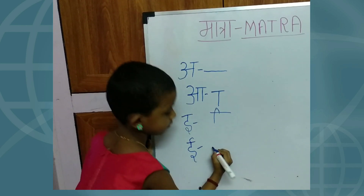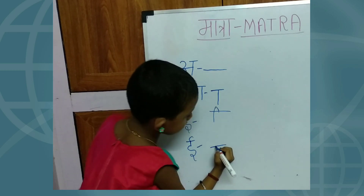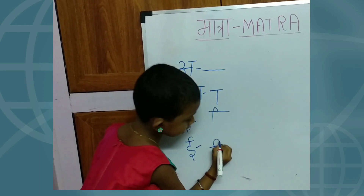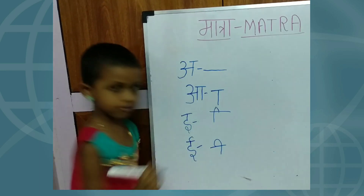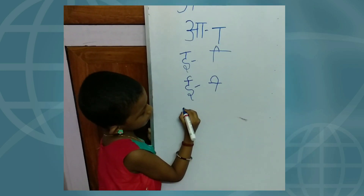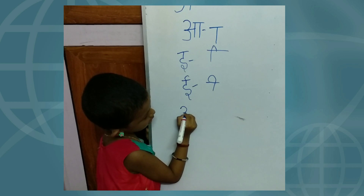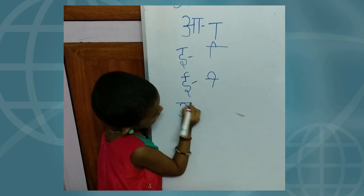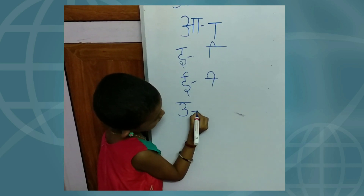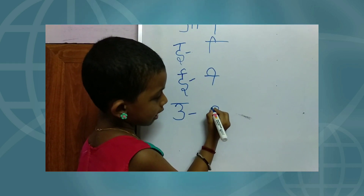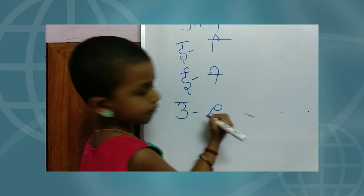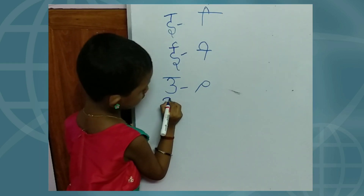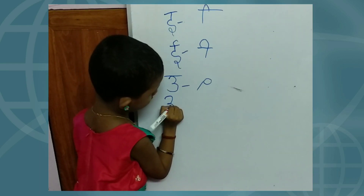One sleeping line, right side curve — Oo ki matra. Circle line towards left — Oo ki matra.